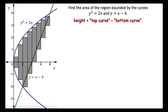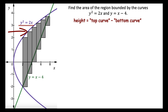Since we used left endpoints, we'll look at the left edge of each rectangle to determine its height. For each of the approximating rectangles to the right of x equals 2, the top left corner rests on the curve y squared equals 2x and the bottom left corner rests on the curve y equals x minus 4. So the height of each rectangle is the difference between the top curve y squared equals 2x and the bottom curve y equals x minus 4.